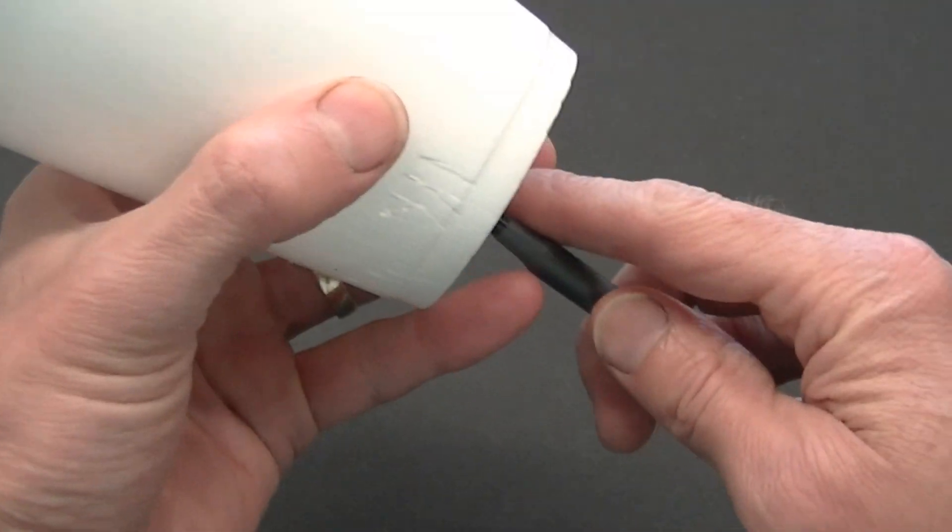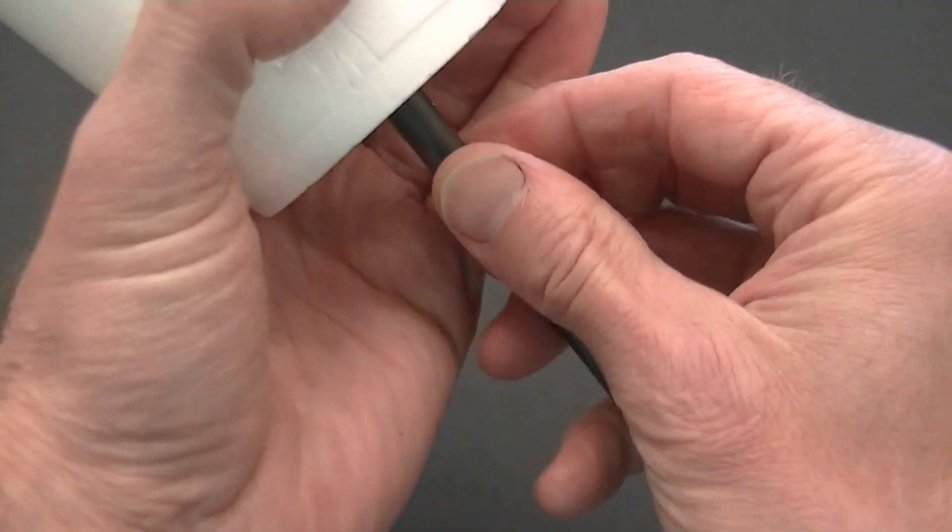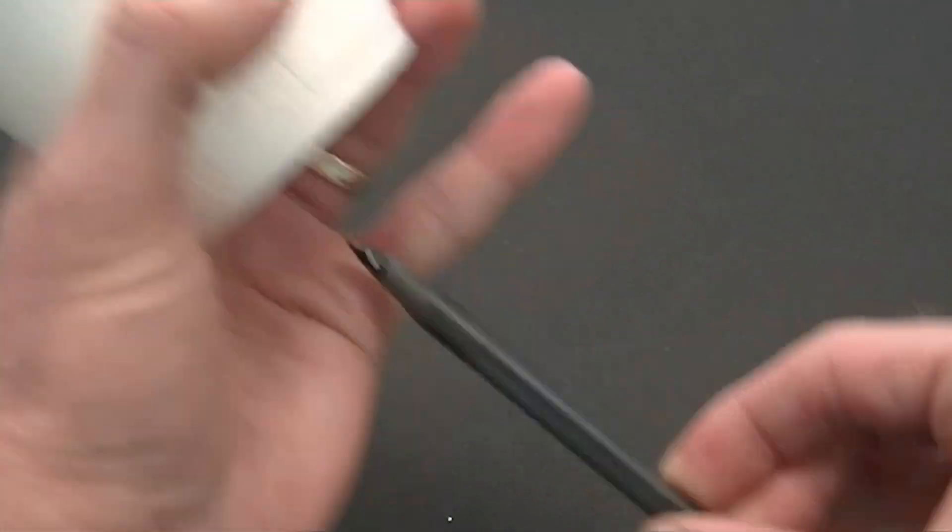When a hole is poked into the bottom of the cup, the tissue paper keeps the powdered sodium polyacrylate from falling out.